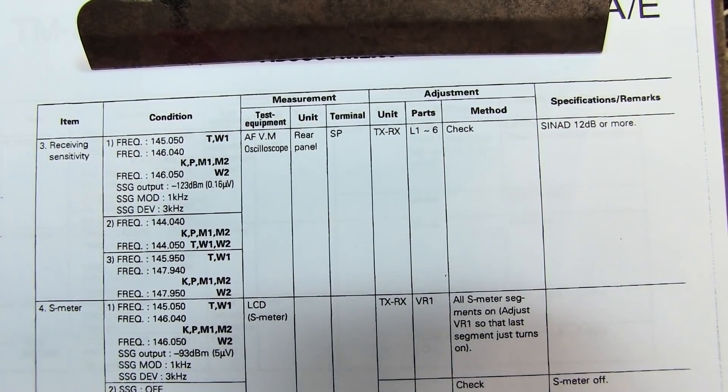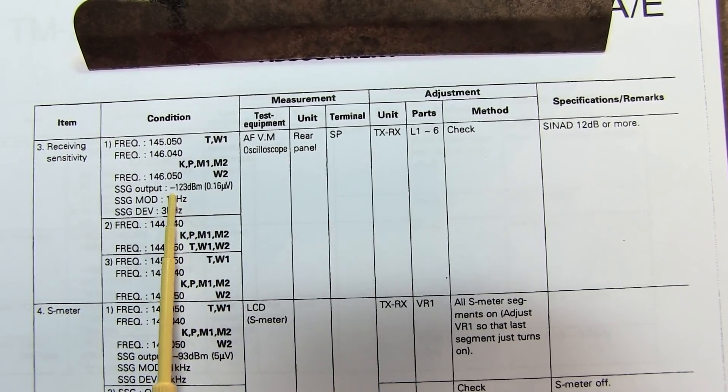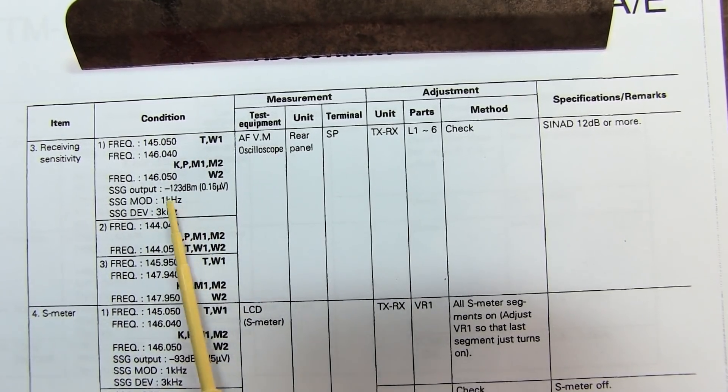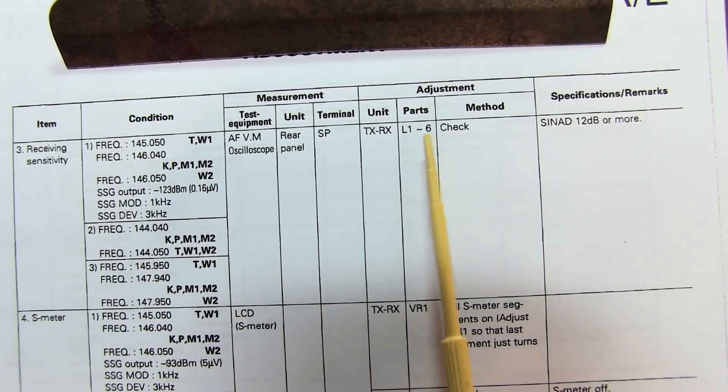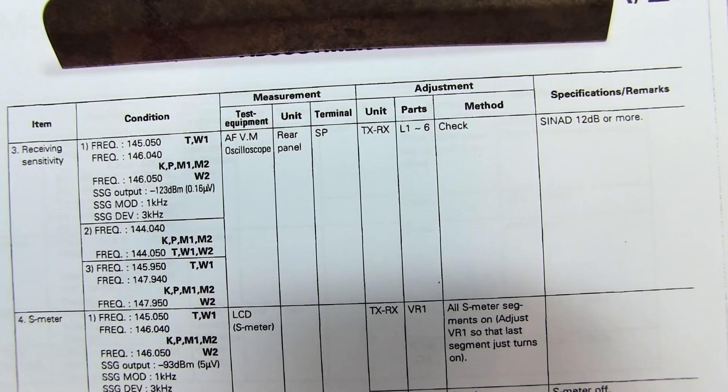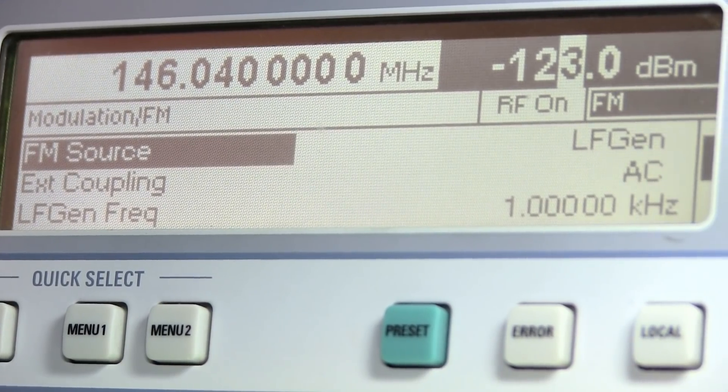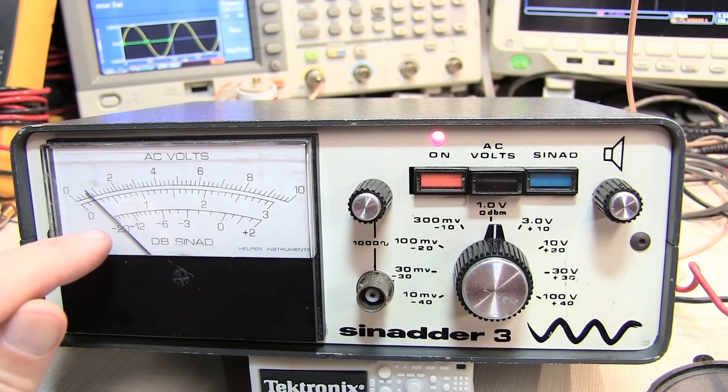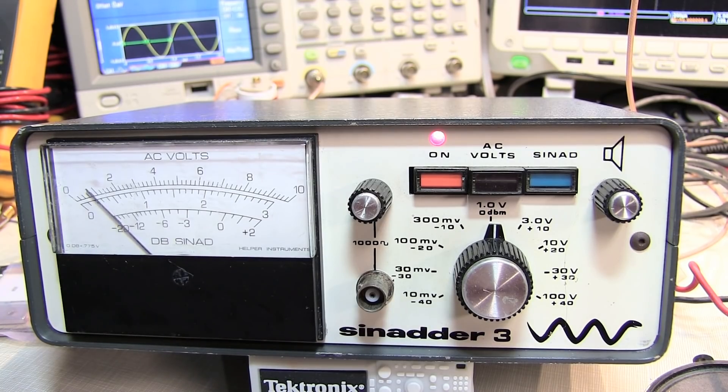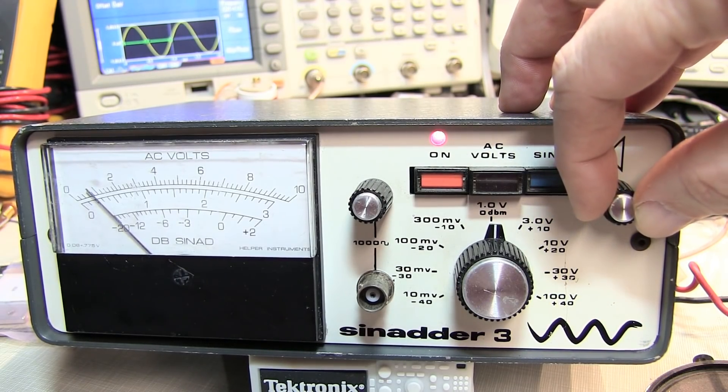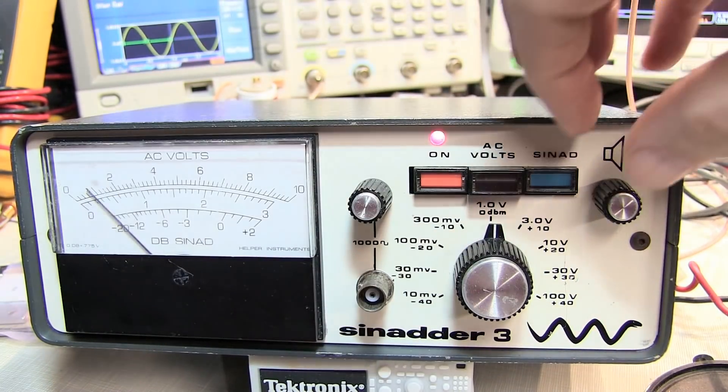The next part of the alignment procedure is to check the receiver sensitivity and in this case we want to put in a lower level signal, minus 123 dBm or about 160 nanovolts RMS. Same modulation conditions and now we just want to check whether the SINAD is 12 dB or better. So let's go take a look and see what we have. So with the minus 123 dBm input signal to the receiver we're measuring about 20 dB SINAD. So it's actually a lot better than 12 so we're actually doing pretty good. So the receiver alignment looks like we're achieving at least the rated sensitivity. And just to get an idea let's turn the volume up and you can hear kind of the noisy 1kHz sine wave and that's with a 20 dB SINAD.